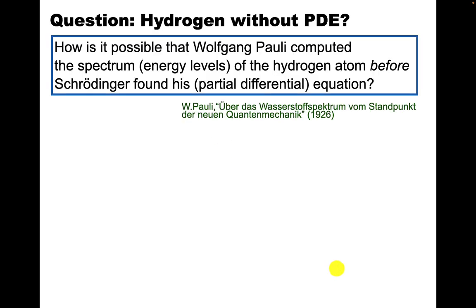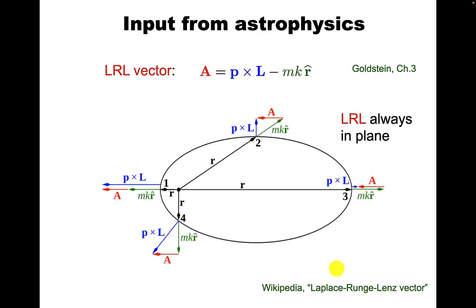So back to the physics question. How did Pauli do this? Well, just like Rutherford before him, he used input from astrophysics. In astrophysics, as discussed in Goldstein's book for example, had been known for a long time - to Laplace, Runge and Lenz, but to people before them too - that if you make this combination of quantities in the Kepler problem of, for example, a planet going around the Sun, then this is conserved. So for each point in this orbit, you can form P cross L. But if the force is exactly inverse square, then the combination A is in fact conserved. The red vector is the same all the time, same direction and same magnitude.